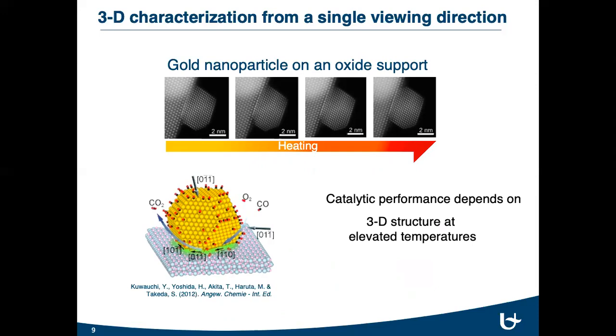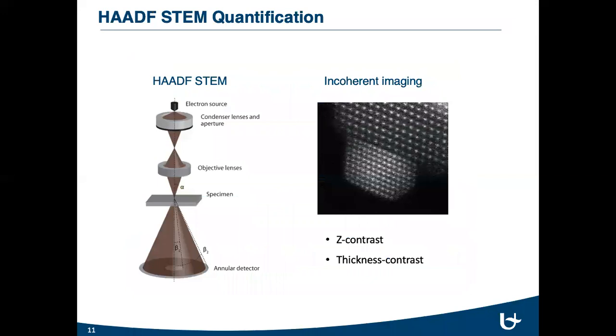However, since electron tomography is not feasible for this system, we need to retrieve the three-dimensional structures from single viewing direction. In this respect, high-angle annular dark field scanning transmission electron microscopy allows a valuable method. The schematic view of the STM is shown here.